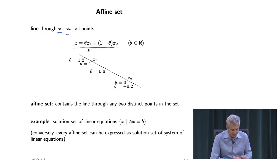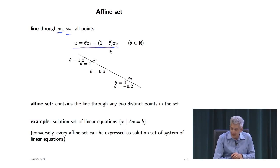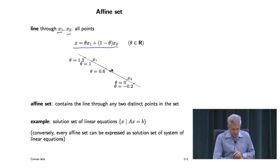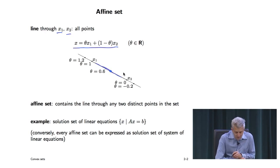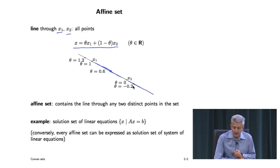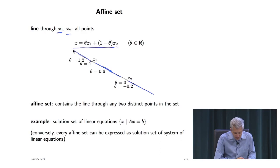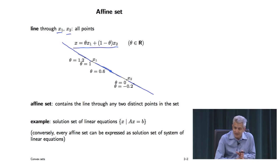Geometrically, if theta equals 1, you get x1; if theta equals 0, you get x2; if theta equals a half, you're at the midpoint. As you vary theta, you move along this line. When theta is negative, you're on the extension past x2. If theta is bigger than 1, you're on the extension on the other side. If theta is between 0 and 1, you're on the line segment between x1 and x2.